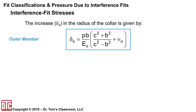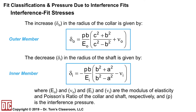Without proof, the equation in the reference handbook for the increase delta O in the radius of the collar is given as: delta O equals (P·B / E_O) · [(C² + B²)/(C² − B²) + ν_O], where P is the interface pressure, B is the nominal radius, E_O is the modulus of elasticity of the collar, C is the outer radius, and ν_O is Poisson's ratio for the collar. Similarly, the decrease delta I in the radius of the shaft is: delta I equals −(P·B / E_I) · [(B² + A²)/(B² − A²) − ν_I], where A may be zero for a solid shaft and ν_I is Poisson's ratio of the shaft.